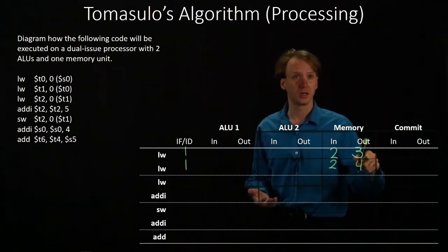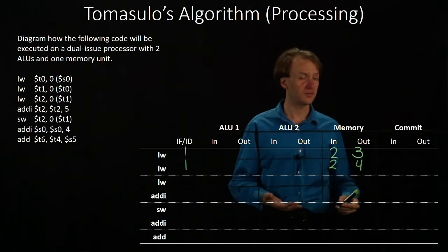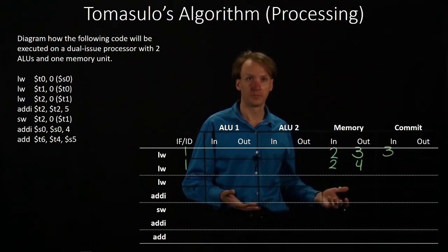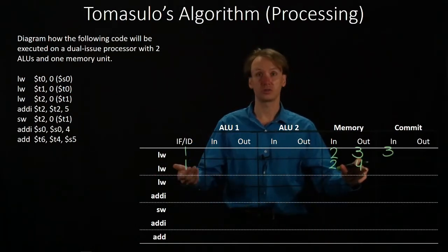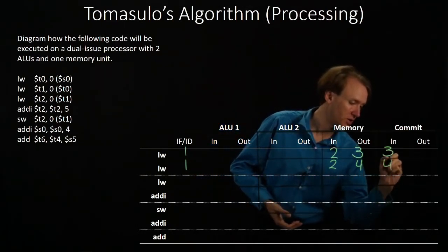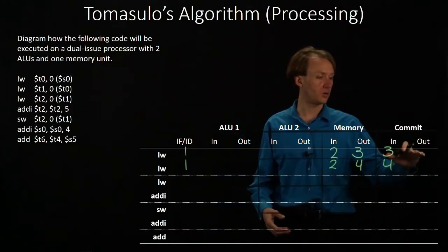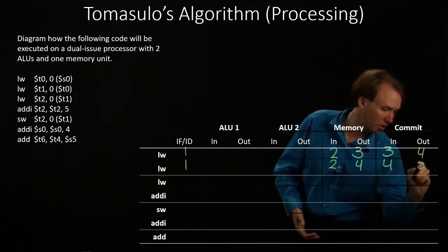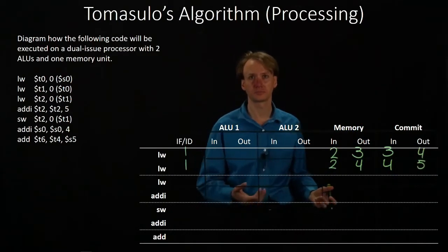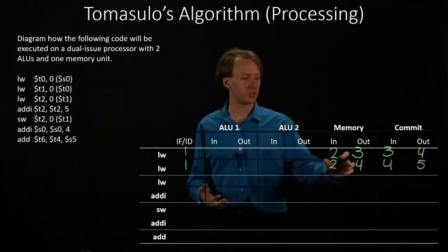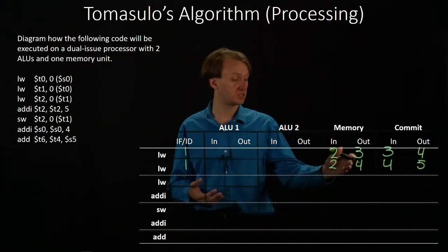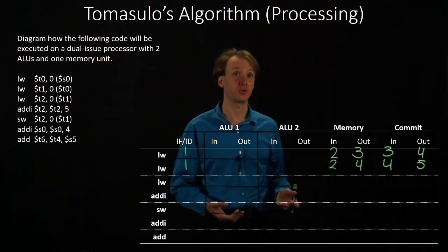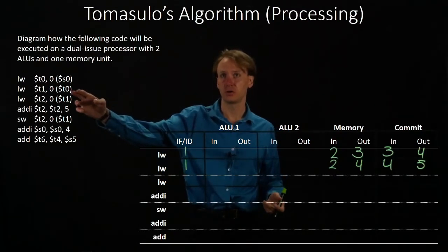Once the first load word has been computed, it will go off to the commit unit. It will arrive there in the same cycle that it was processed, but it may have to wait there for a while. Same thing with our second instruction — it'll go off to the commit unit after being processed. We can commit this instruction immediately, as well as the other one. As soon as those have arrived, they can be committed in the next cycle. There was actually a dependency between these two instructions, but the second instruction was delayed because the functional unit was in use, and also because it didn't have one of its two parameters — it needed to get a value from the first load word instruction.